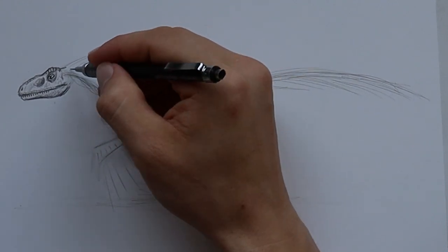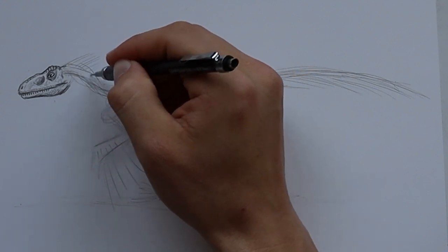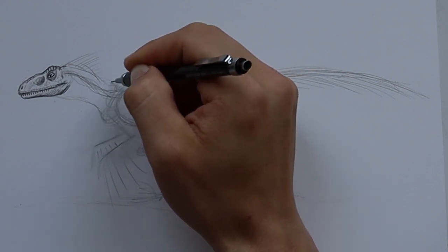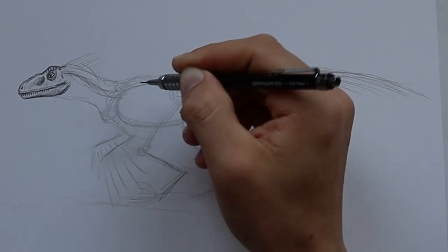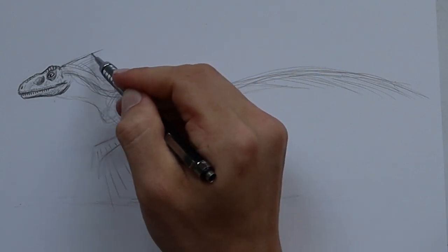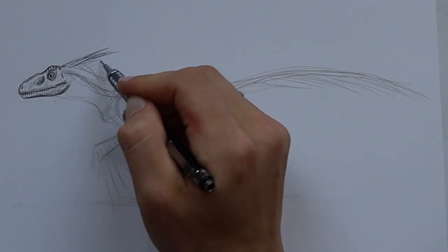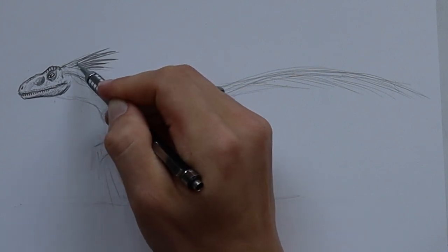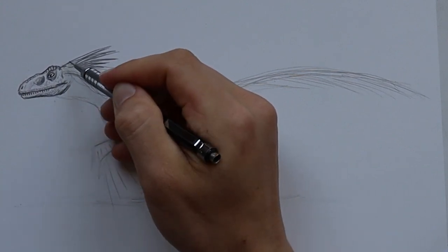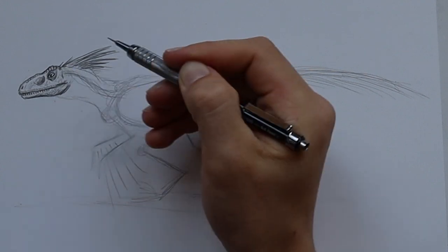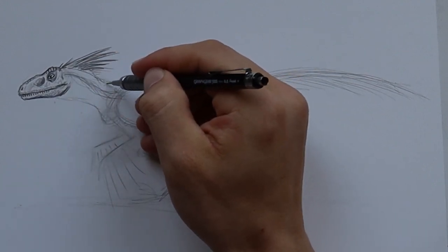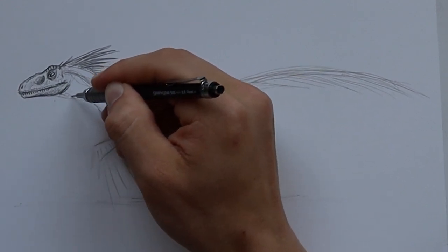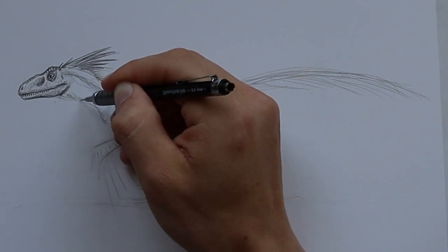Now we can move on to the neck. So the neck is going to be thick, quite thick. That's mostly because of the feathers, which make it look larger than it would be if it didn't have feathers. It's got these cool spiky feathers that go quite far out. So be sure to put those in. They almost look like spikes, you know.